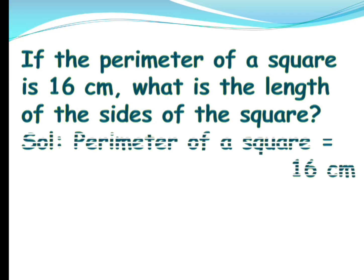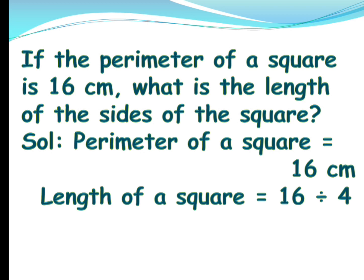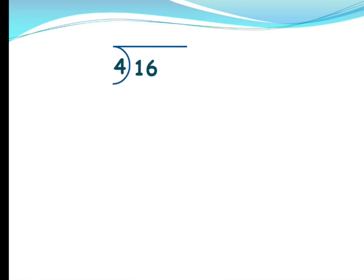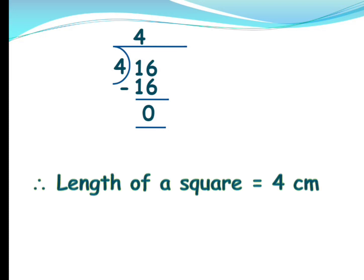Given: perimeter of a square equals 16 centimeters. The length of the side of the square equals perimeter divided by 4, which is 16 divided by 4. Now, 16 is the dividend and 4 is the divisor. The first digit 1 is less than 4, so we take both digits: 16. Check your 4 times table — 4 fours are 16 — so the quotient is 4. 16 minus 16 is 0, so the side of the square is 4 centimeters.